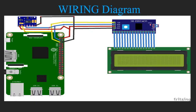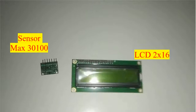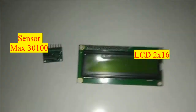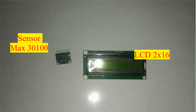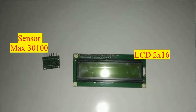This time, we want to create some project: Raspberry Pi with LCD-I2C. This picture is a wiring diagram. This part is pulse oximetry. Sensor MAX30100. LCD 2x16.